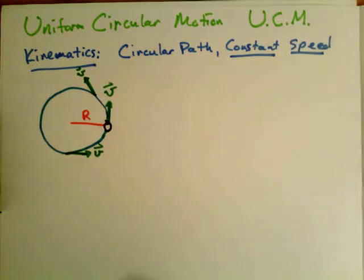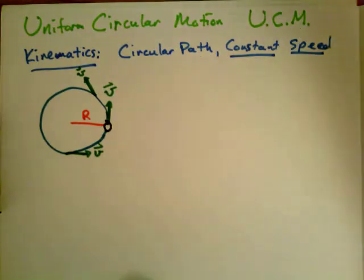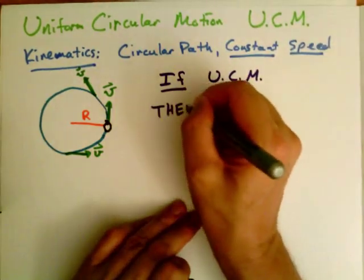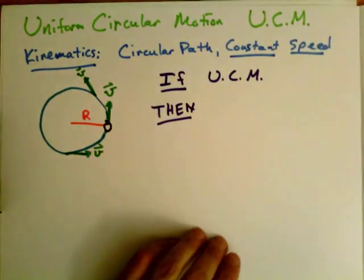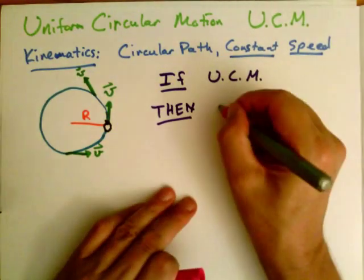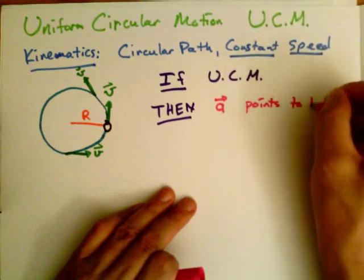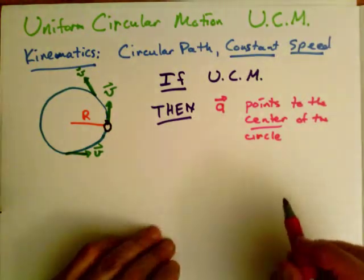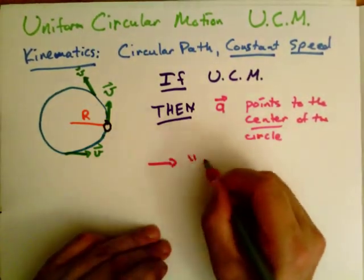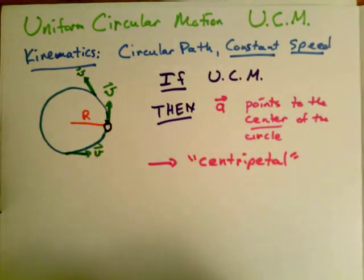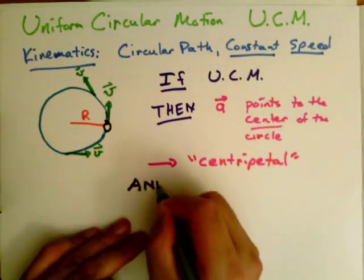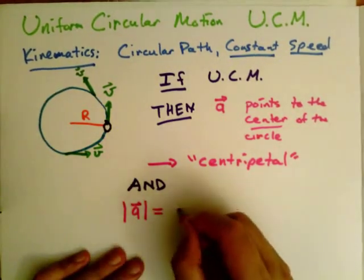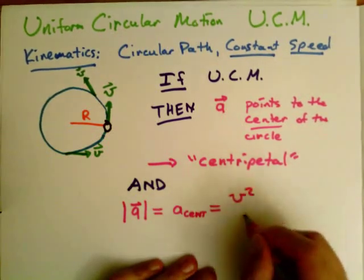So what can we say about this motion kinematically? If it is true that we have uniform circular motion, then we know what the acceleration is. The acceleration is a vector that points to the center of the circle. We call that centripetal, towards the center. And we know its magnitude. The magnitude of the acceleration, which we call the centripetal acceleration, is V squared over R.